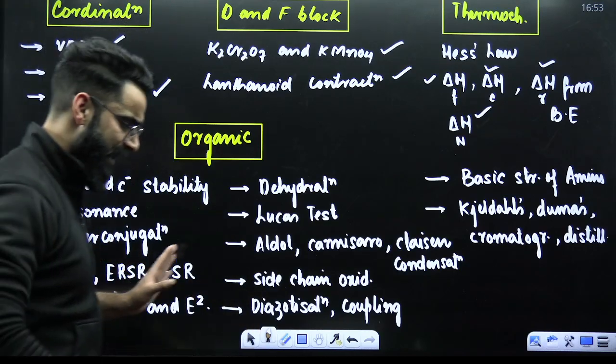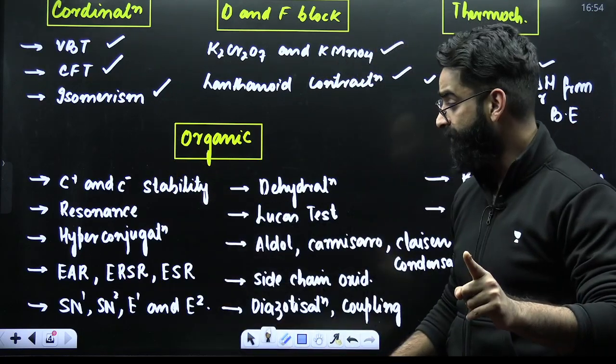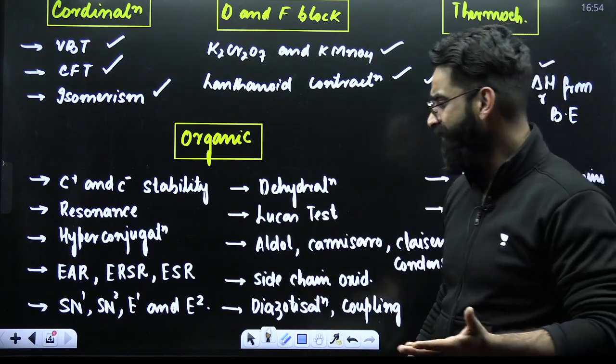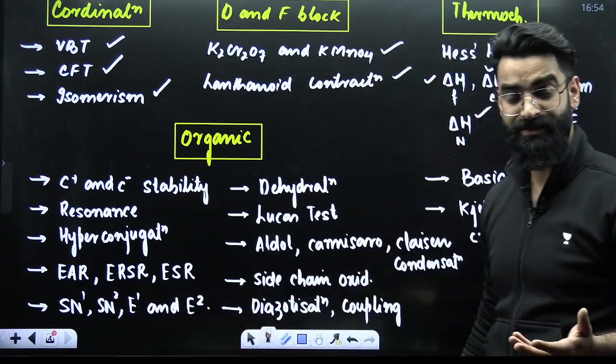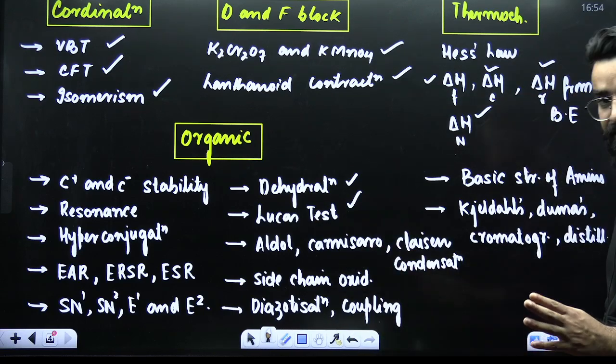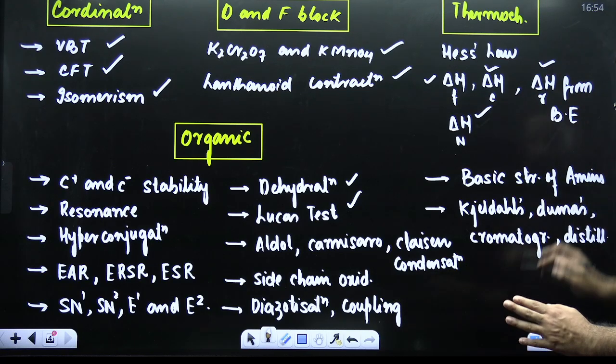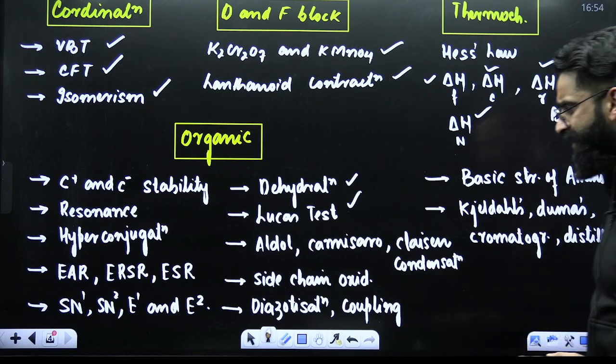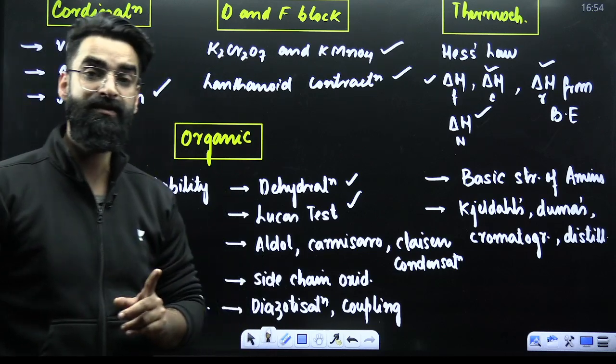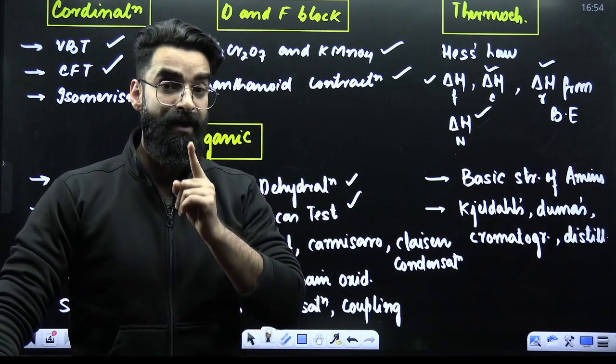And when it comes to your organic. In organic, I have summarized everything. What are the favorites which will be asked. Carbocation, carbene instability. Your resonance. Hyperconjugation. This is your basically general organic chemistry. Then different types of reactions like you have got SN1, SN2, E1, E2 reactions. Again, like frequently they are asked. Dehydration. Lucas test. Aldol. Cannizzaro's Claisen condensation. Similarly, your side chain oxidation. Diazotization. Coupling reactions. Basic strengths of amines. Kjeldahl's method. Dumas method. Chromatography. Distillation. These are the sure-shot topics which will be coming in your organic chemistry. And my dear students, one more suggestion. Do not skip the naming reactions at all.